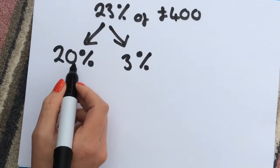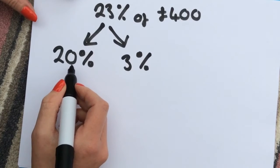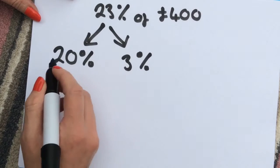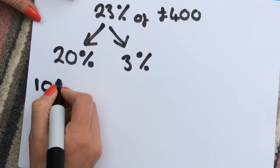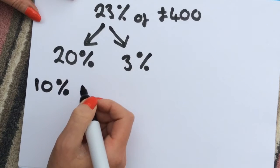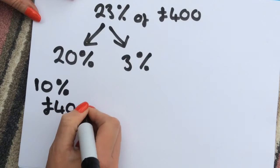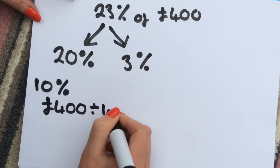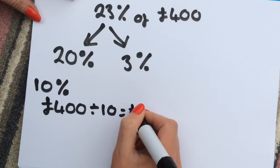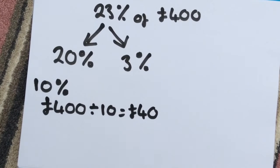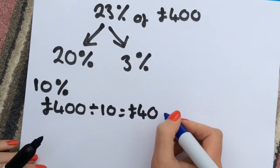Once you've got it in your tens, the first thing you then do is find 10%. To find 10% of any amount, you need to divide by 10. So we take the amount, the £400, we divide that by 10. That will then give you £40. That is now worth the 10%.